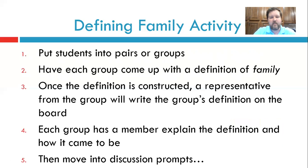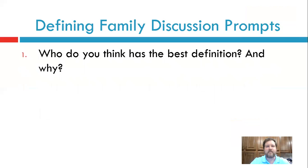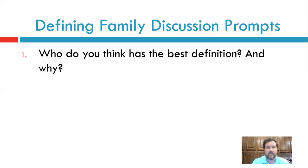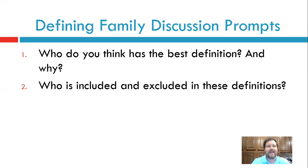The fifth thing I do is move into discussion prompts. First: who do you think has the best definition and why? This gets at what students value in a definition — the important part is the 'why,' getting them to talk about criteria, standards, and what they find more appealing, more fair, or more worthy. Second: who is included and excluded in these definitions? I'll pick one or two and ask: who is included in this definition of family? The first time, a lot of people struggle, but when you get to the excluded part, that's where it gets really interesting.